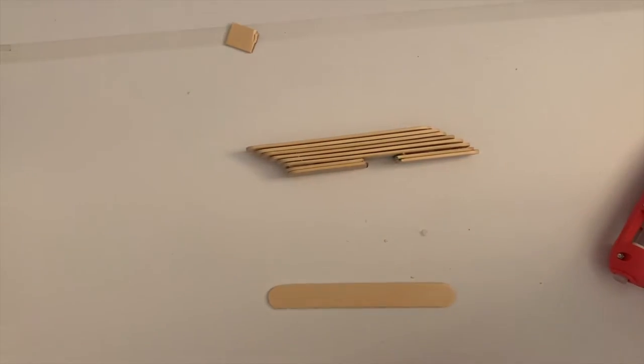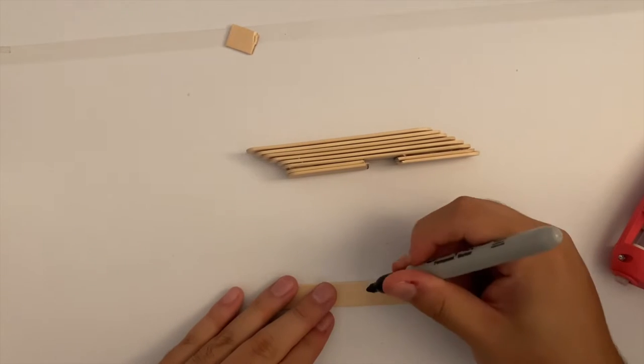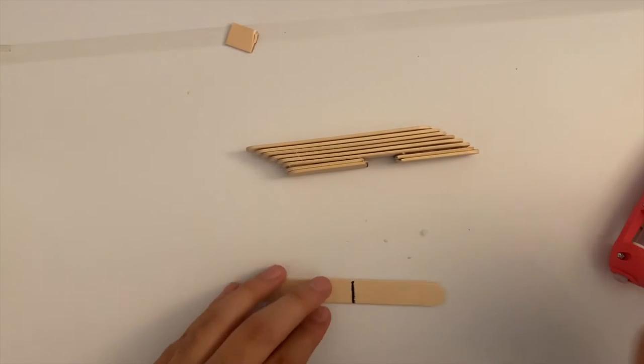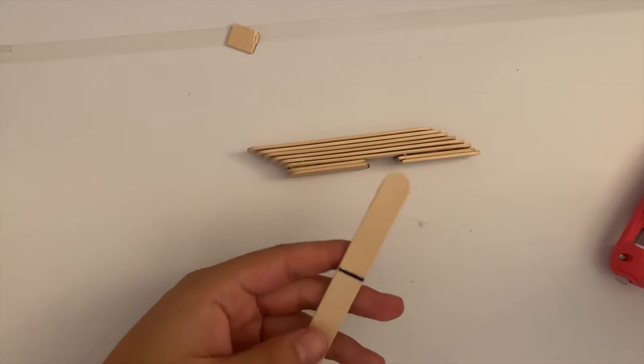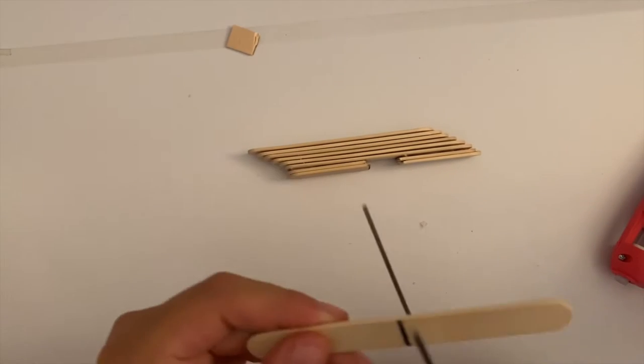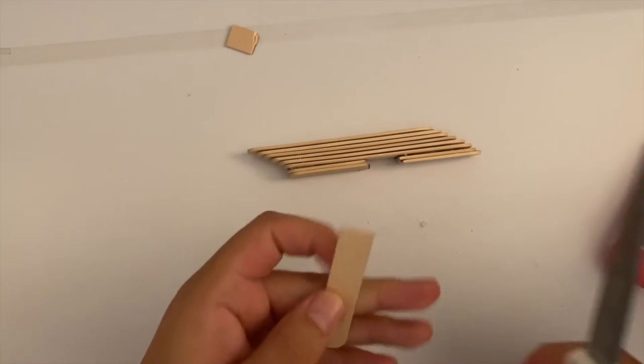Now grab a new piece of stick and mark it as shown in the video. This indicator will be cut in the next step. Go on and cut the piece in the middle on the indicator.